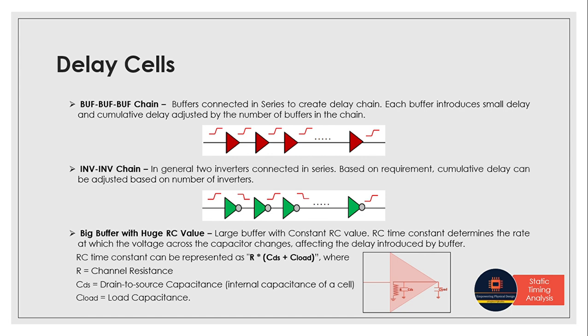So this approach might be used for larger delays where precise control is required. So as we know that RC time constant is represented as R into capacitance, that is internal capacitance of a cell plus the load capacitance. Internal capacitance means the drain to source capacitance.